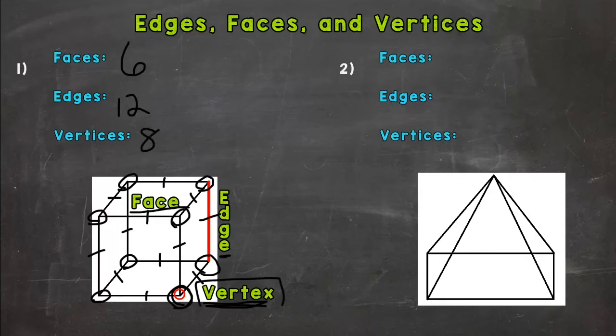So let's go over to the rectangular pyramid on the right here. So let's count the flat surfaces that make up the exterior of that 3D figure, the faces. So we have the bottom, which is one. And then let's go around the sides. We have the right side, two. The back, three. The left, four. And then the front would be five. So we have five faces on that rectangular pyramid.